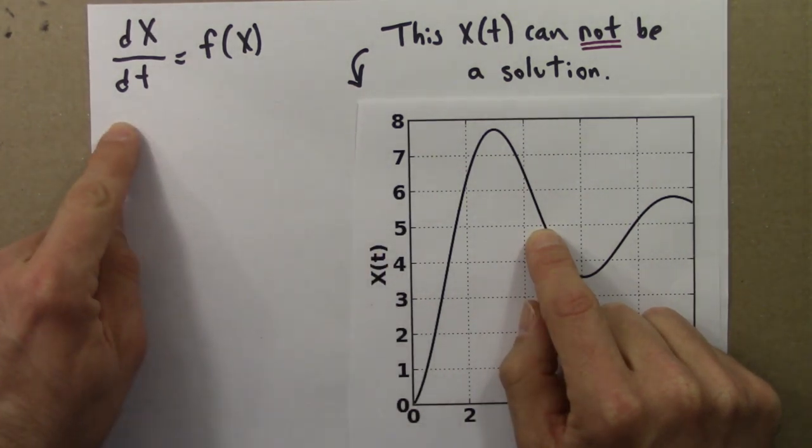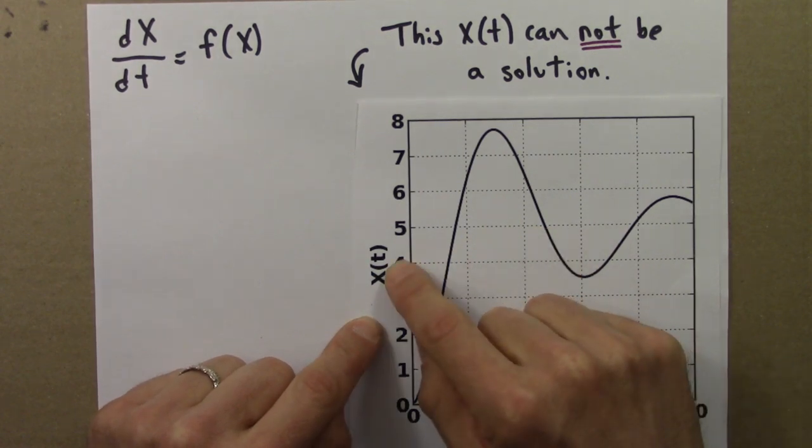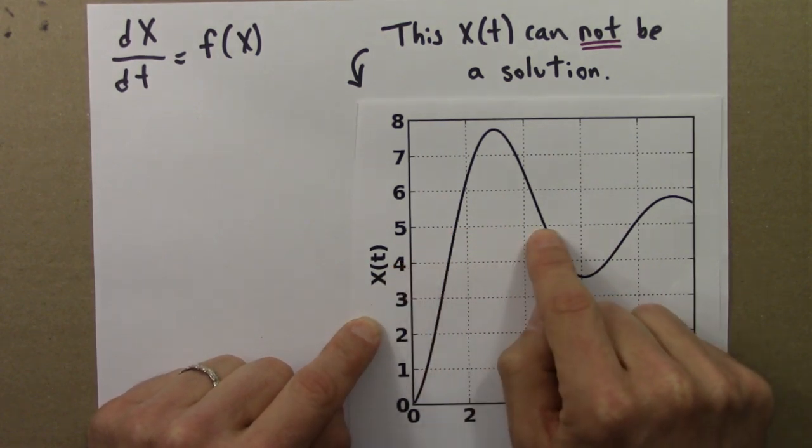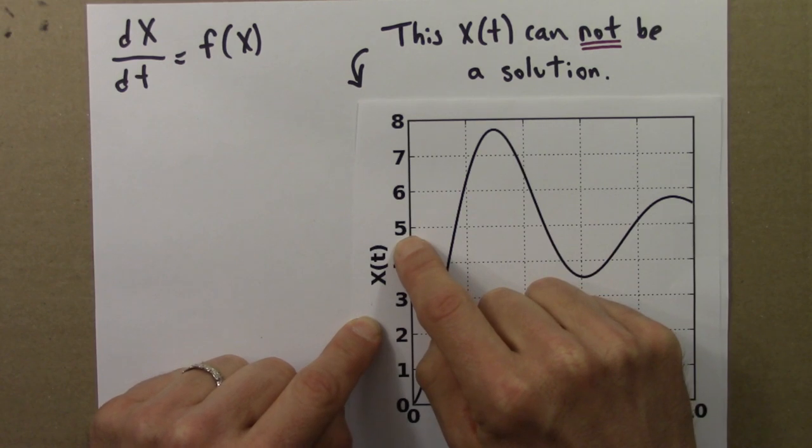If the rate of change depends only on x, it can't have two different values at the same value x equals 5.